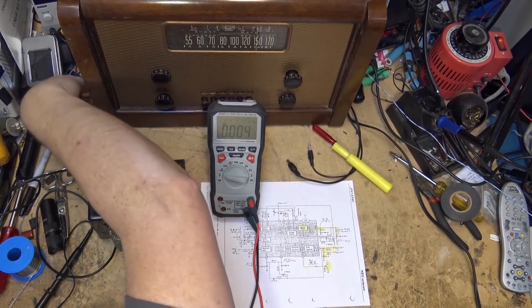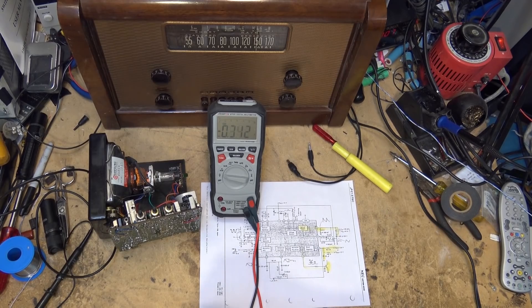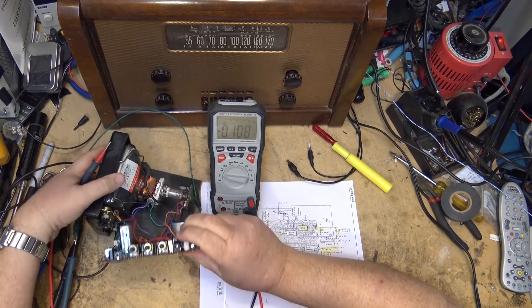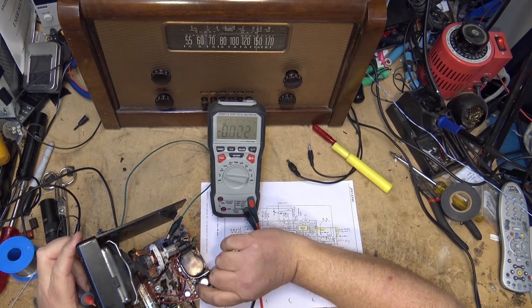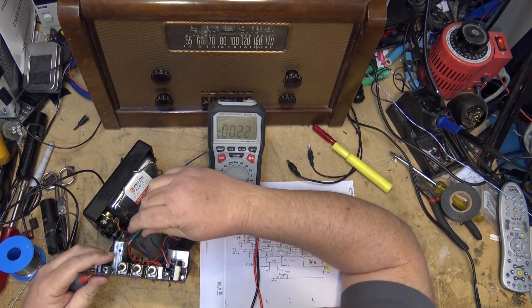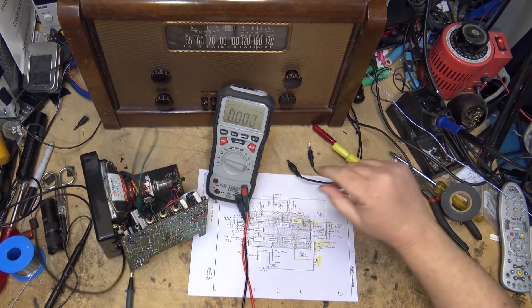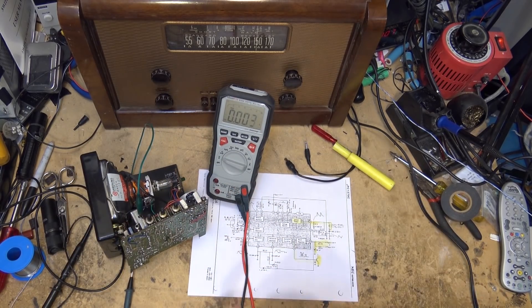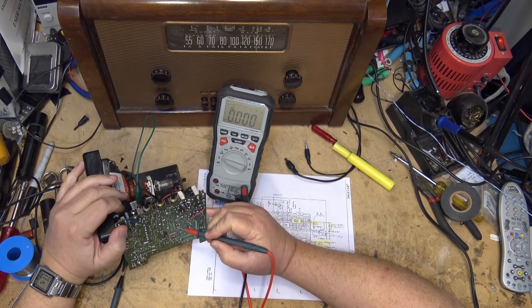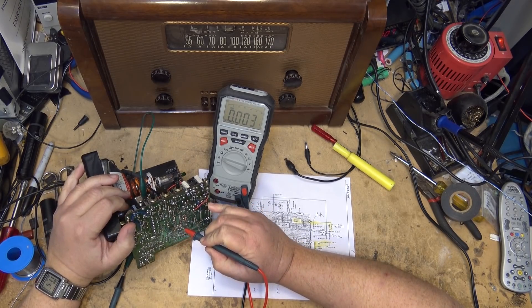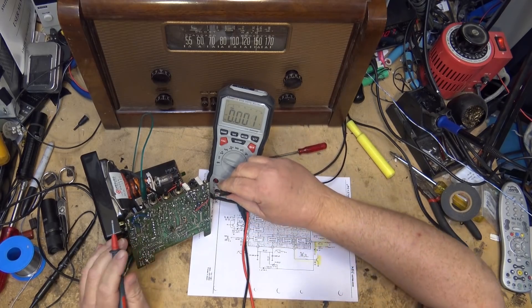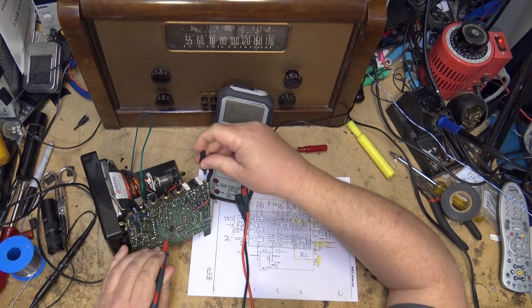I'm just going to grab a jumper, hook one up to ground. Pin 1 is on this side here. So I'm going to look at pin number 10. This is pin number 10 over here. This should be my voltage input. When I plug in the power, this should be my 12 volts in.